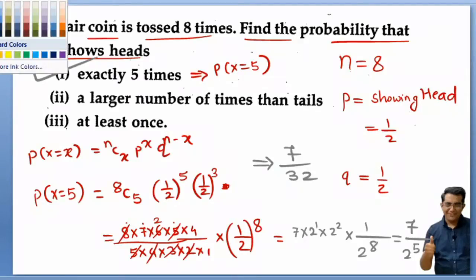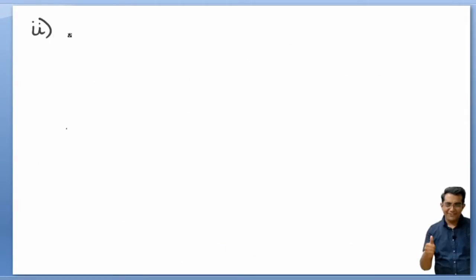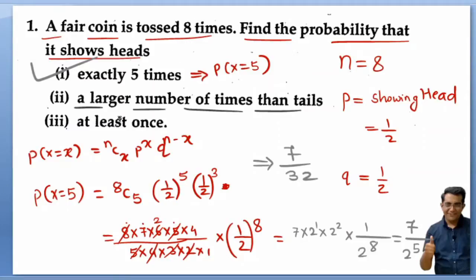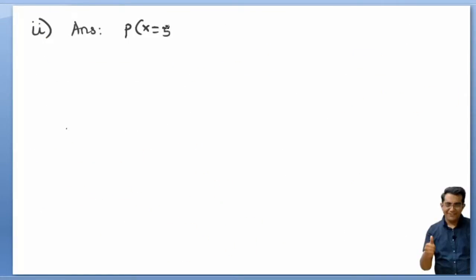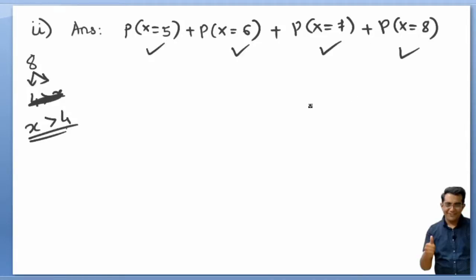For the second condition — heads appearing a larger number of times than tails — when a coin is tossed 8 times, we need the number of heads to be greater than 4. The favorable events are 5 heads, 6 heads, 7 heads, and 8 heads. You have to apply the formula for each of these values and sum the results.